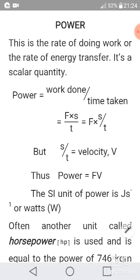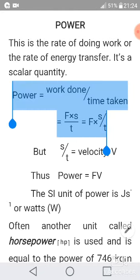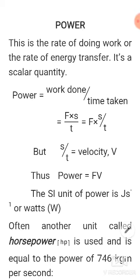You have seen already that work done is force times distance moved in the direction of the force. Then the time taken is t. So power becomes force times distance divided by time, or force times distance over time.